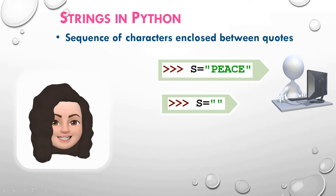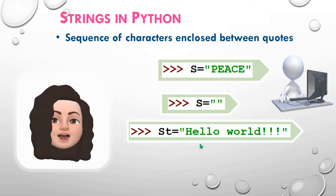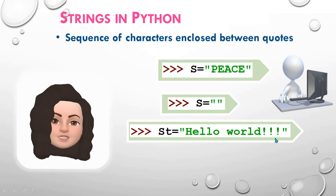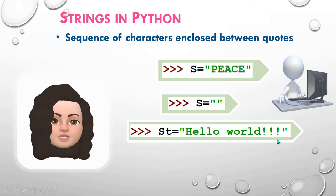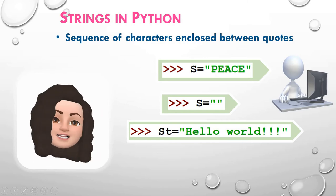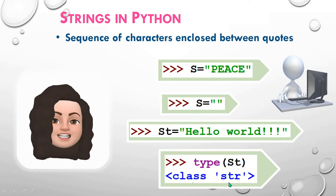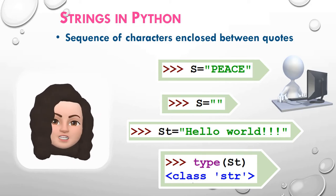Look at the next example: variable st is equal to, within double quotes, 'hello world!!!' — it has special characters like exclamation marks and a space also. Let's see the type of this variable st. So type(st) will give you the class str, which means this is a string variable.